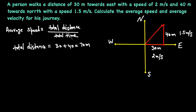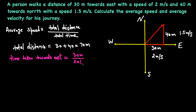Now we need to find the total time. There are two different intervals and the speed is not uniform — it's different in each — so we need to find the time separately for each interval. Time taken towards east equals distance over speed, which is 30 meters divided by 2 meters per second, giving 15 seconds.